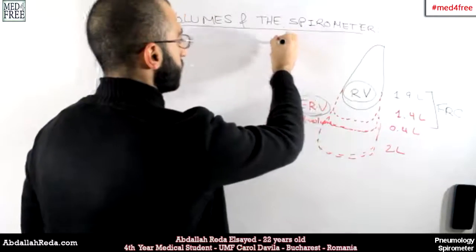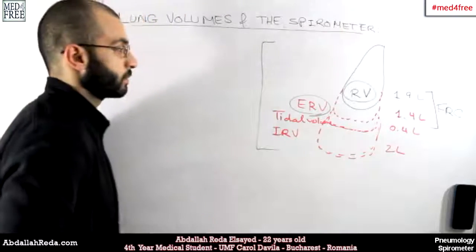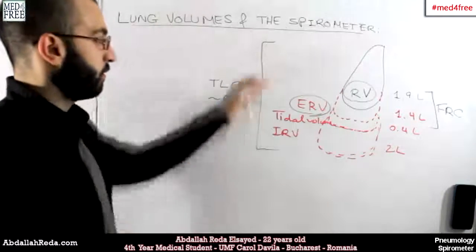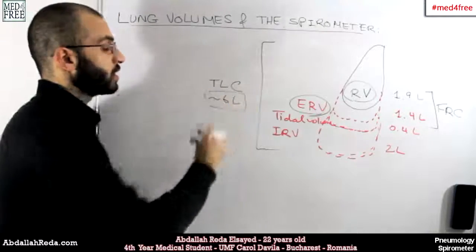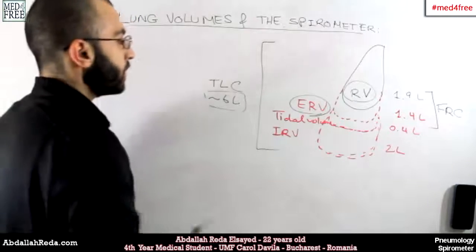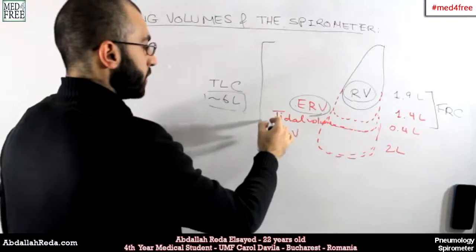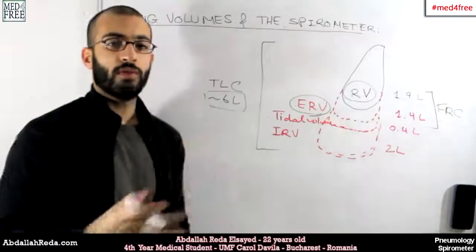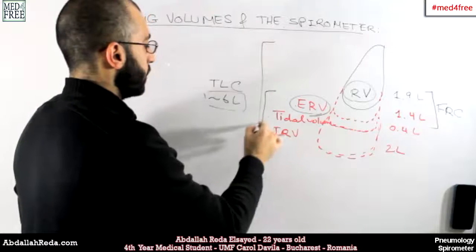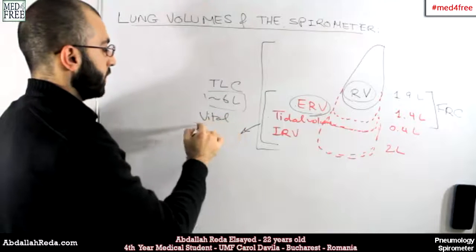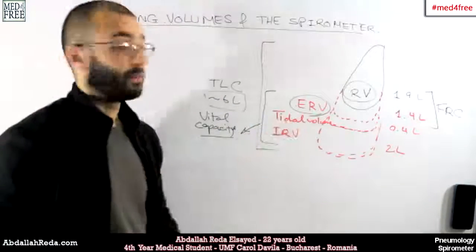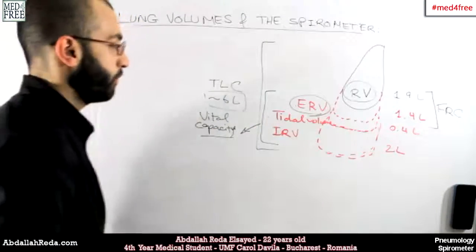The whole thing together is called total lung capacity, and it's about 6 liters — the sum of all the volumes. The three volumes added on top of the residual volume — the expiratory reserve volume, the tidal volume, and the inspiratory reserve volume — are called the vital capacity. Vital capacity is the capacity of air that the lung can vitally take in during the process of respiration.